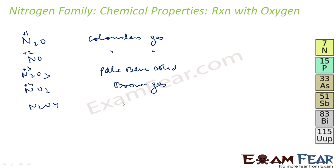We talk about N2O4, dinitrogen tetroxide. Oxidation state is here again plus four. This is again a colorless gas.